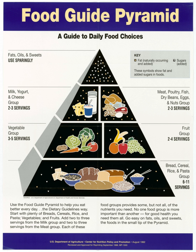Approximately 25% of the US population are supertasters and 50% are tasters. Epidemiological studies suggest that nontasters are more likely to eat a wider variety of foods and to have a higher body mass index, a measure of weight in kilograms divided by height in meters squared.